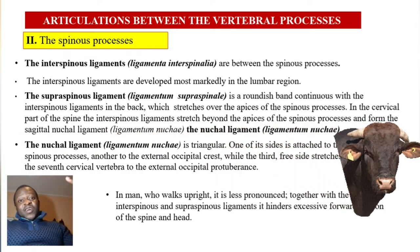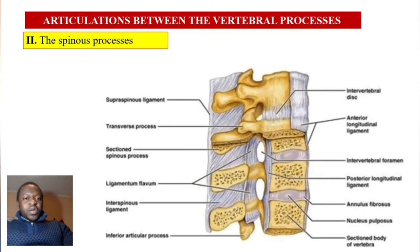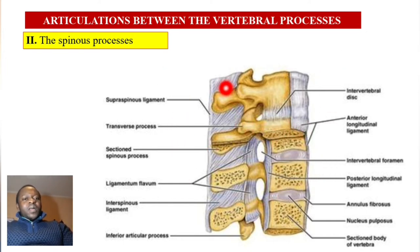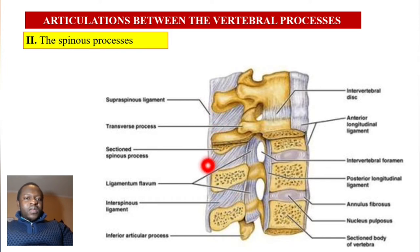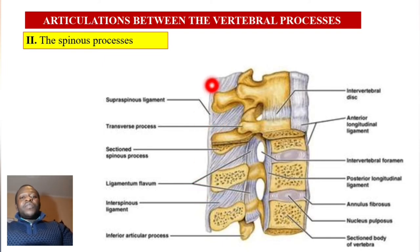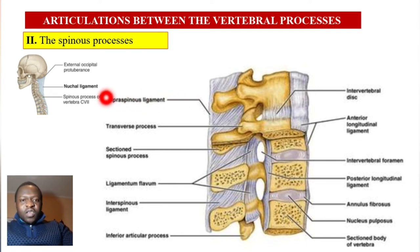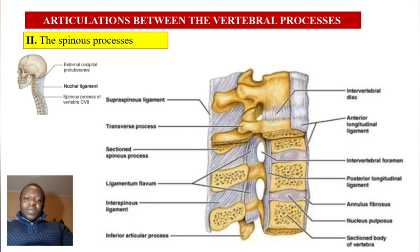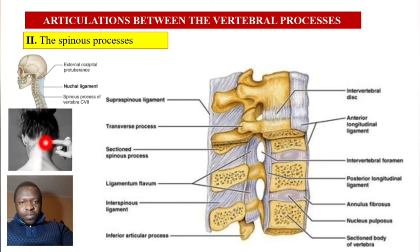The nuchal ligament is mostly developed in four-legged animals. Here you can see the spinal orientation — anterior and posterior sides — with the spinous processes, the interspinous ligament between them, the supraspinous ligament at the apices, and the nuchal ligament from the external occipital protuberance to the apex of C7. In some people you can actually see this ligament externally.